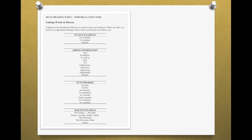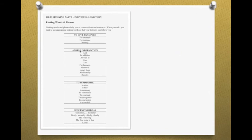这些连接词有哪些呢？如果你在要给一些example，想要举例子的时候，你可以说for example, for instance, namely。这些就是有效的在讲要给例子的时候的连接词，人家听到你说for example就知道接下来你要讲的一定是一个例子。那当你要加入新的资讯的时候，Adding information，你可以用的连接词有：and, in addition, as well as, also, furthermore, moreover, apart from, additionally, besides。这些都是当你在加进资讯的时候可以用的连接词。